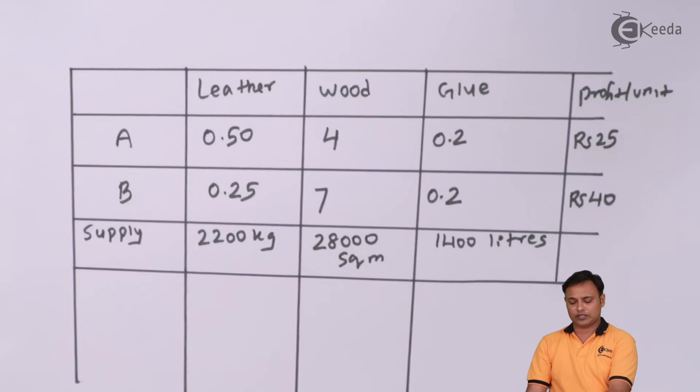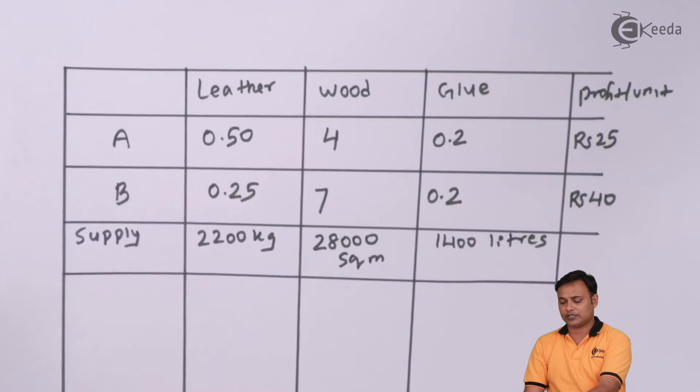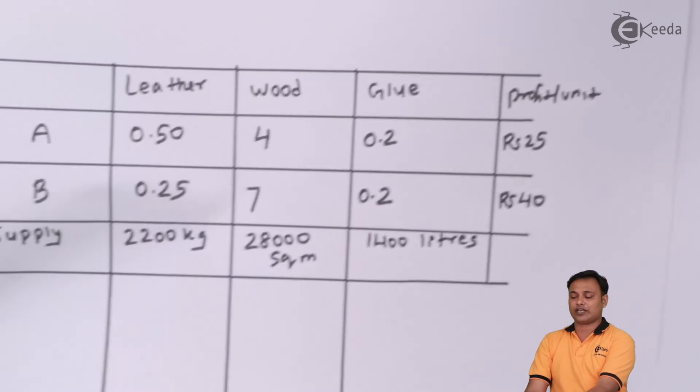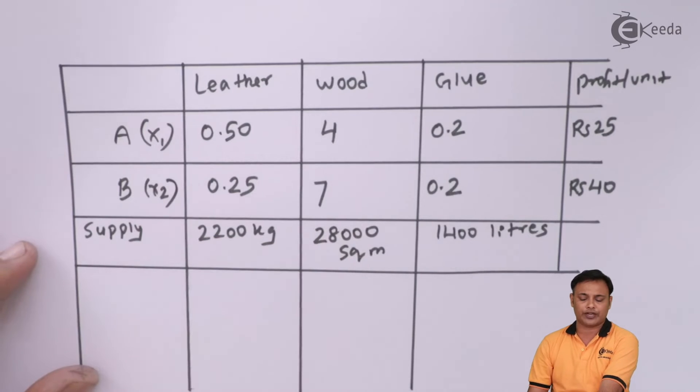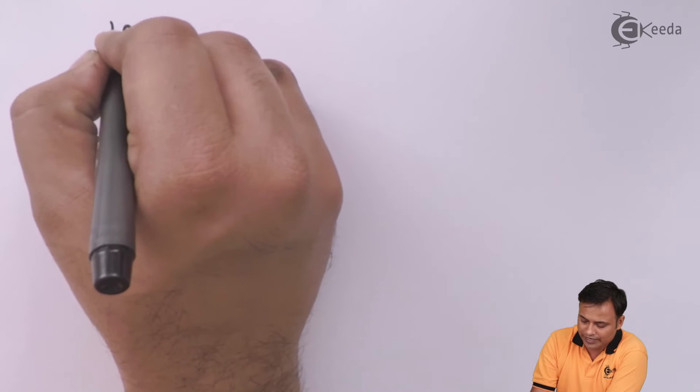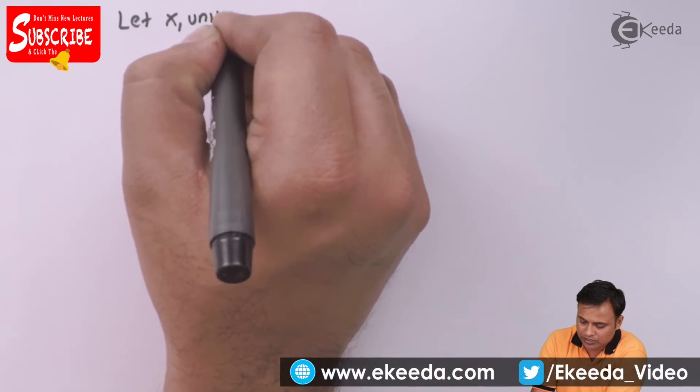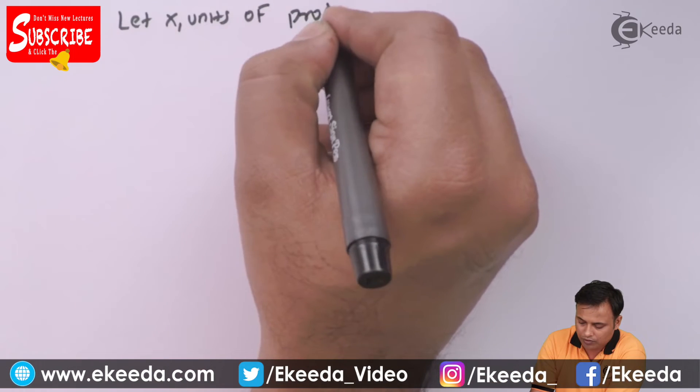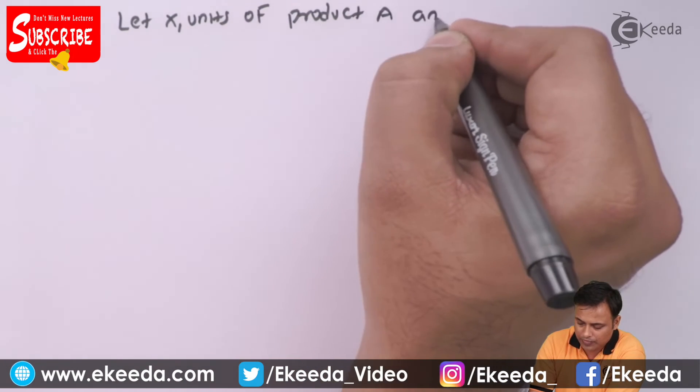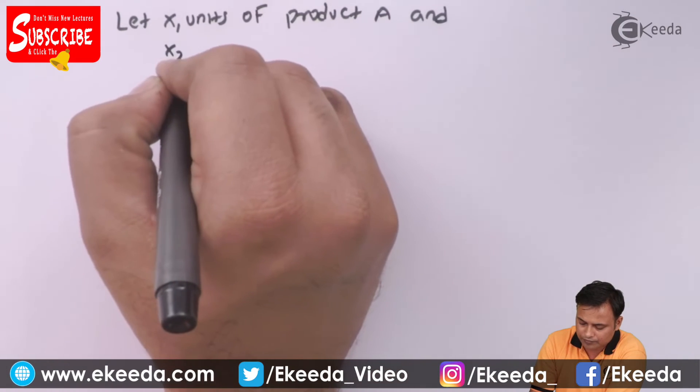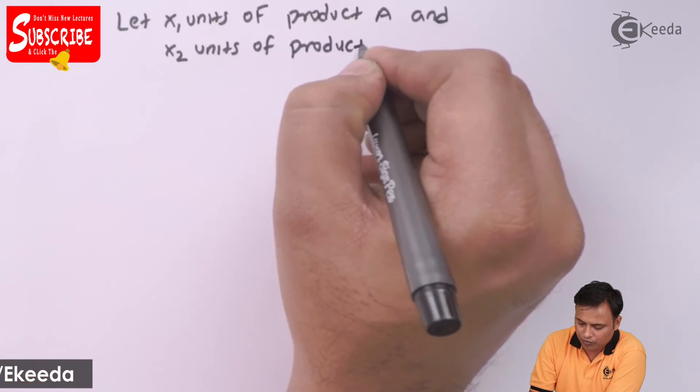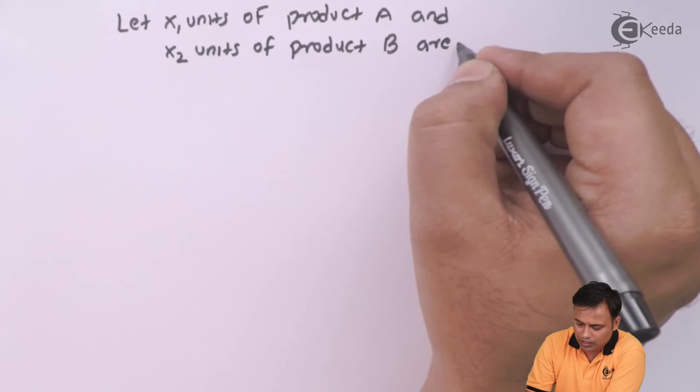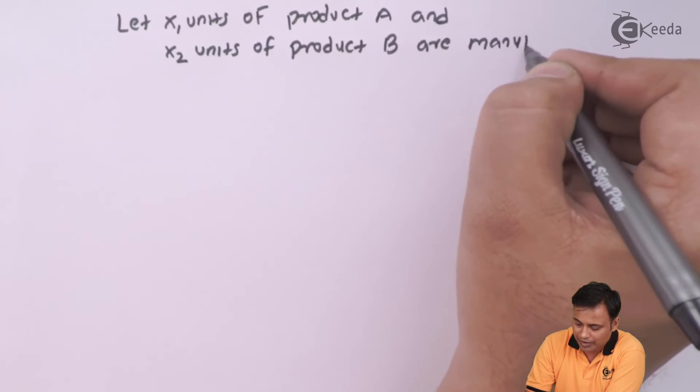And we need to formulate this. We need to give them the objective function and the constraints. First, I will note down the assumptions. We will make assumption that we are making x1 units of product A and x2 units of product B are manufactured.